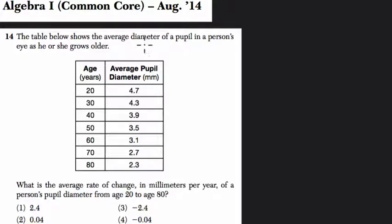It says the table below shows the average diameter of a pupil in a person's eye as he or she grows older. So I don't know if this is true, but this is interesting. We're looking at the change in your eye over time.